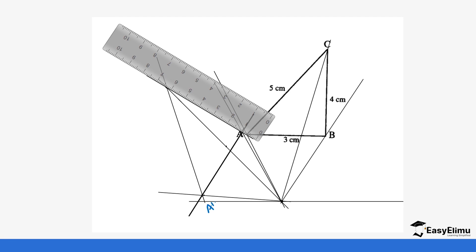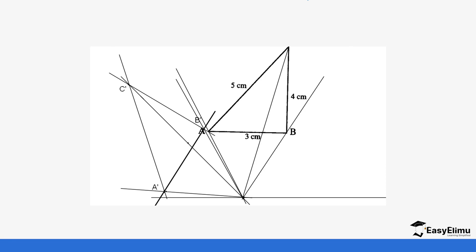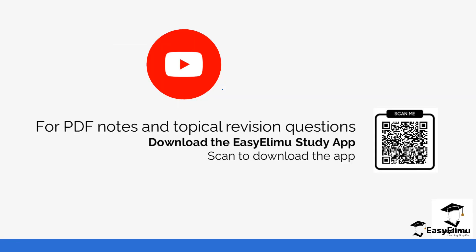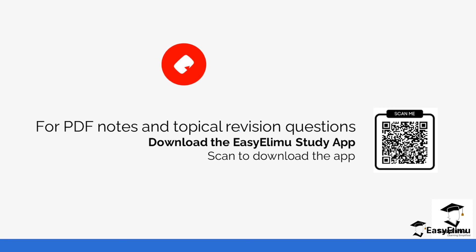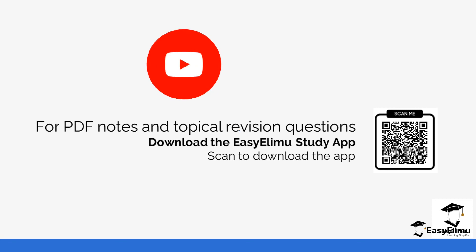We have our A', B', and C'. This is what we have — the complete rotated triangle. You can see this triangle has been rotated by 60 degrees; the rotation is very clear. That is how you do it when you're not given the Cartesian plane. You just need a ruler and a protractor. Watch out for more revision questions on the app, try it out in your exercise book with a ruler and protractor, and see you in the next lesson.